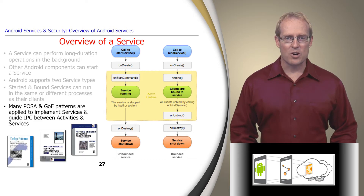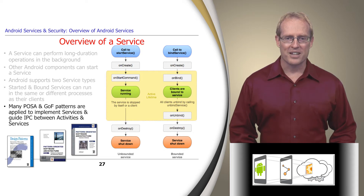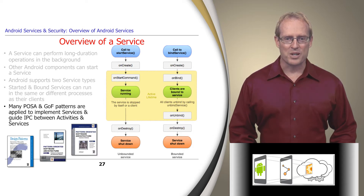To implement started and bound services flexibly and extensively, as well as to guide their inter-process communication efficiently, Android applies many POSA and Gang of Four patterns, including Activator, Command Processor, Active Object, Proxy, Broker, and Publisher Subscriber, as we'll discuss later in this MOOC.